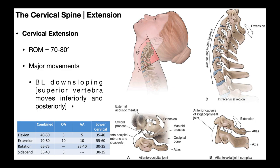Consider that inferior movement: if C3 is moving inferior relative to C4, C3 is coming closer to C4. That puts the facet joint in a more closed-packed position. Cervical extension is actually the more closed-packed position of the cervical spine, whereas flexion is the more open-packed position. Those articulating surfaces of the facet joints are approximating.